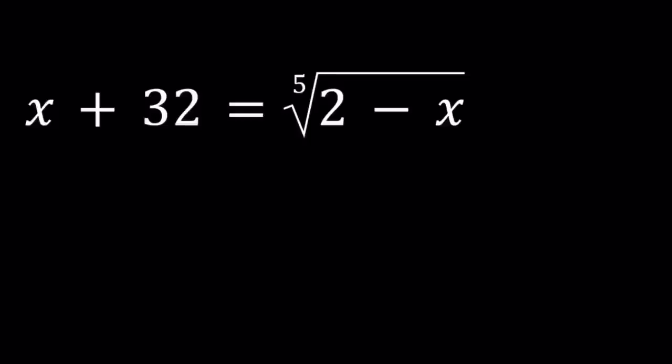Hello everyone. In this video we're going to be solving a radical equation. We have x plus 32 equals the fifth root of 2 minus x, and we're going to be solving for x values. So I'm going to show you the solution method and then we'll also take a look at the graph.